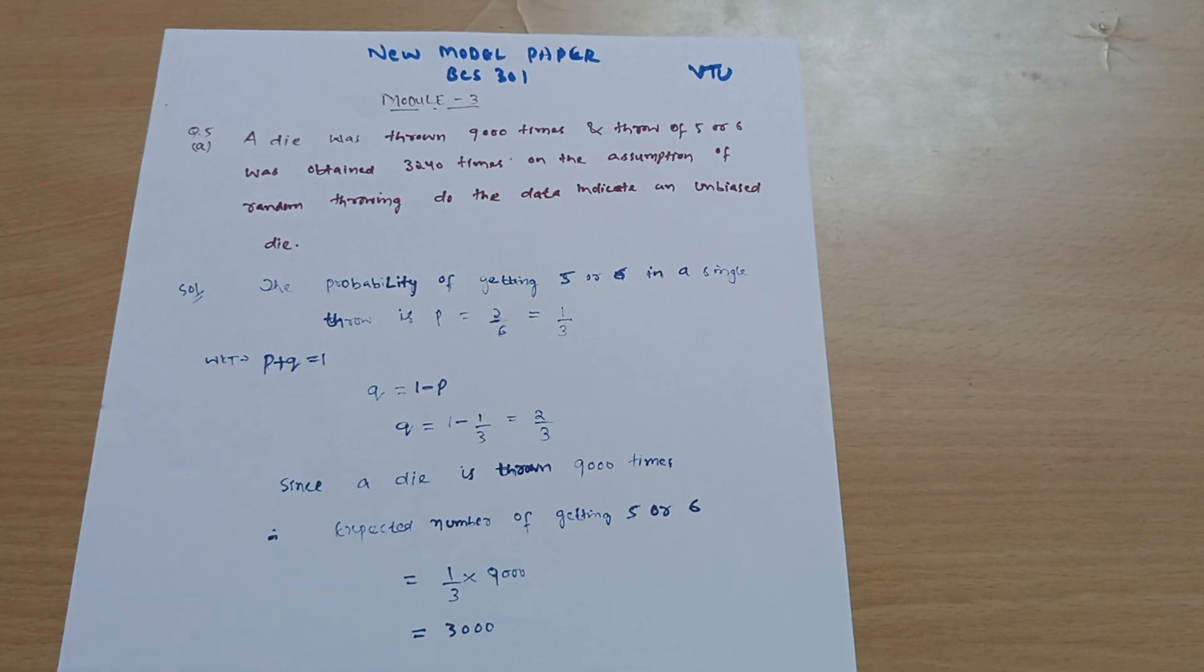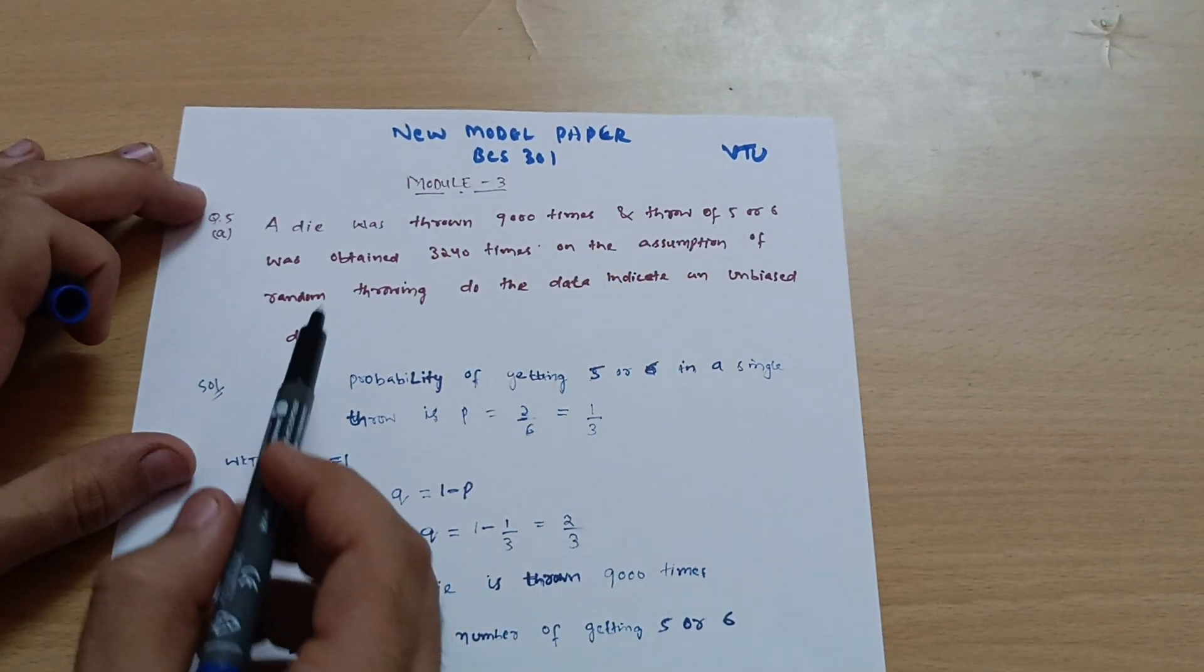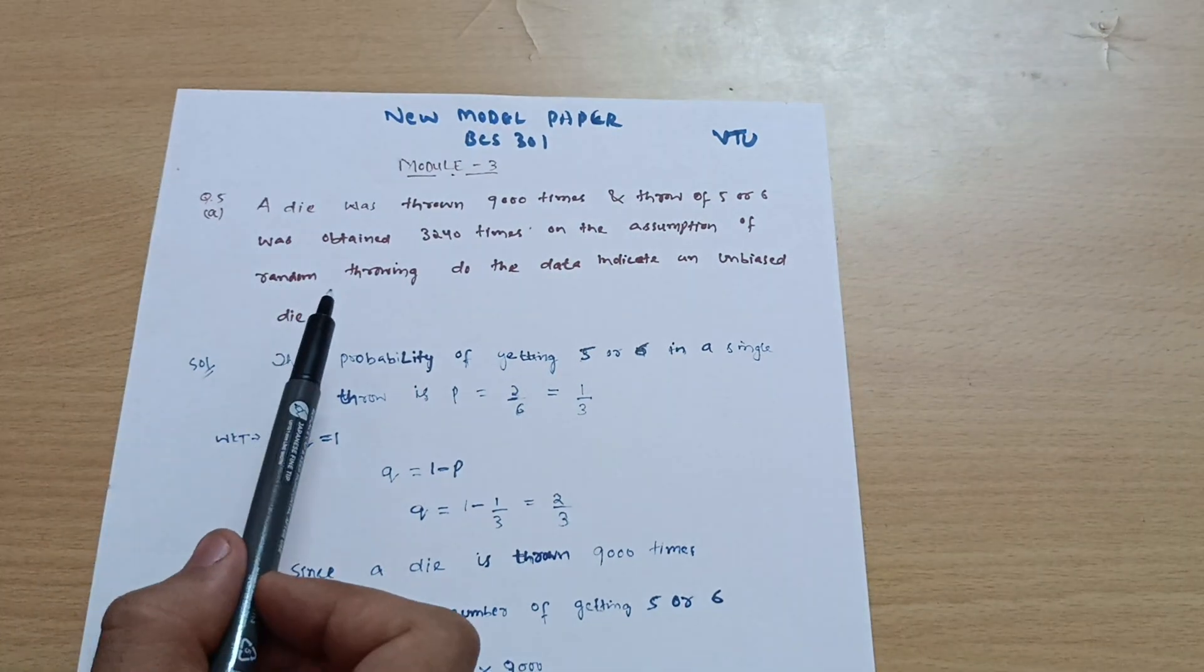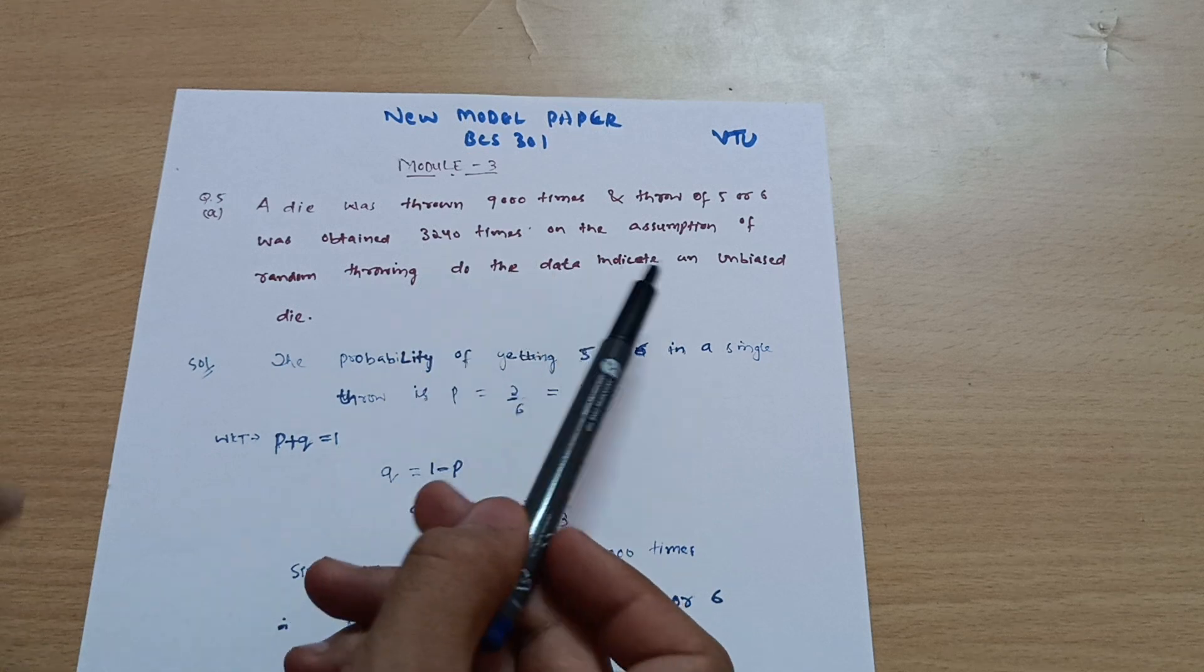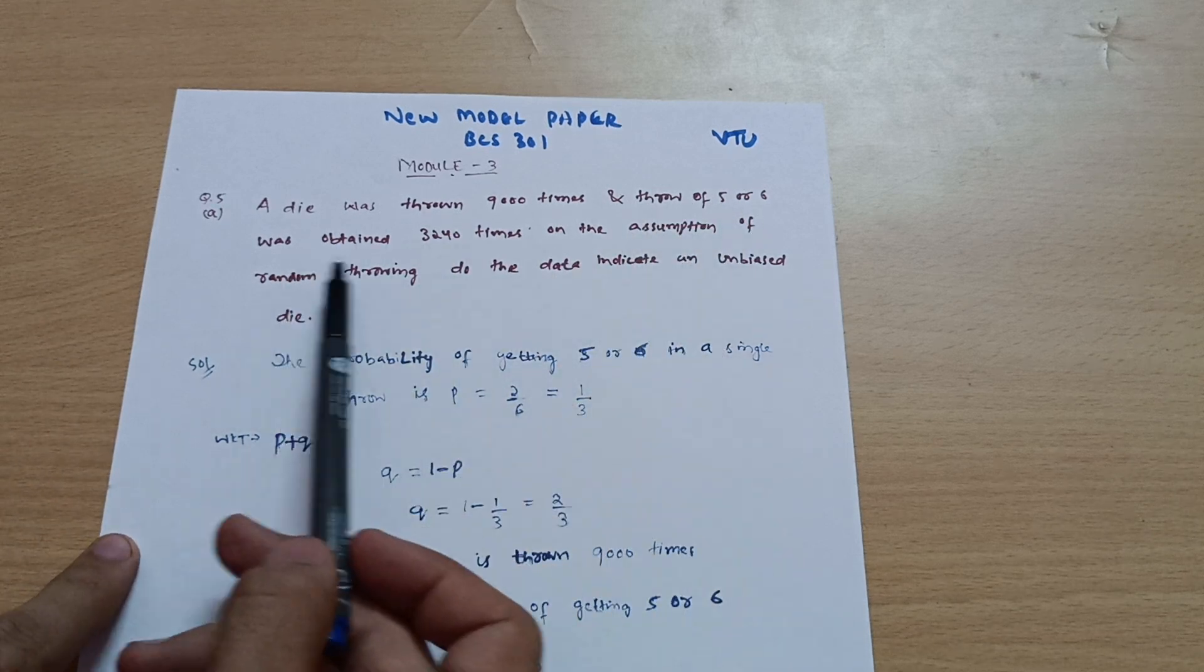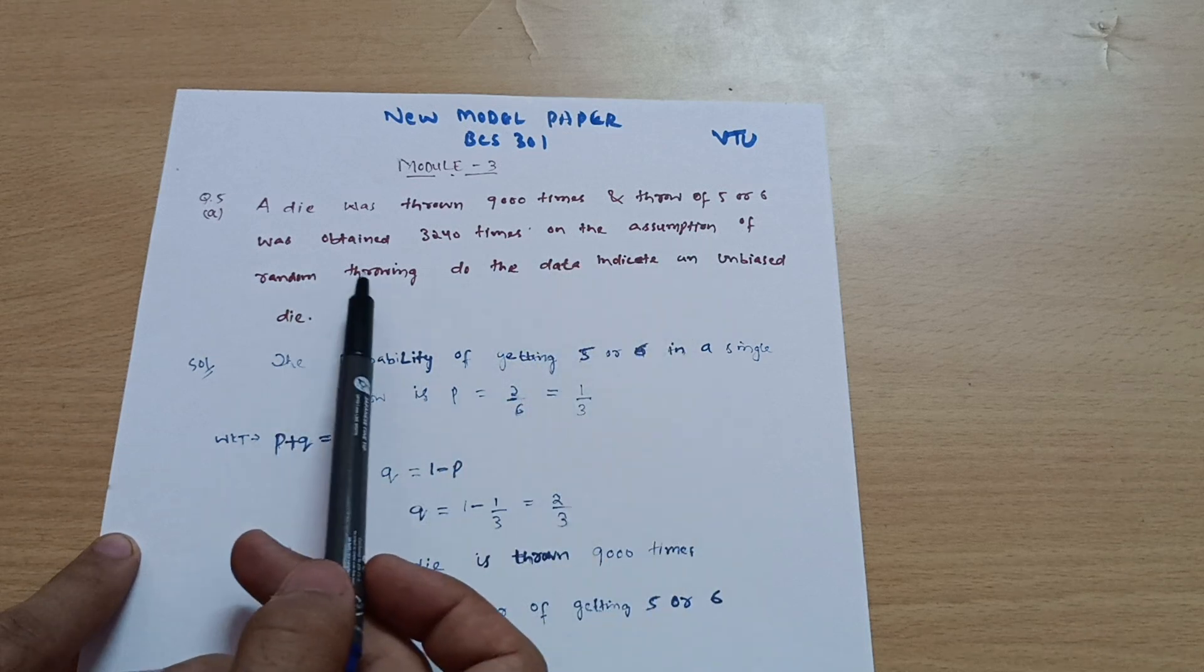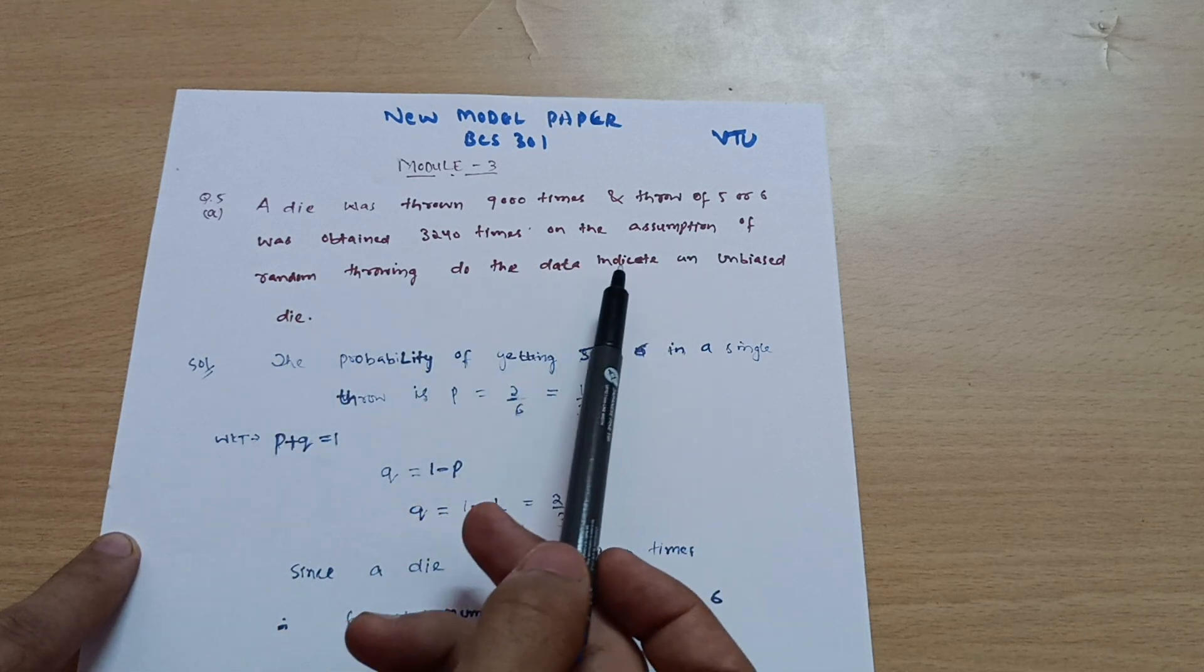Hello everyone and welcome back. Hope you are all doing well. Today I will be explaining the model third question number five. A die was thrown nine thousand times and a throw of five or six was obtained three thousand two hundred forty times. On the assumption of random throwing, do the data indicate an unbiased die?